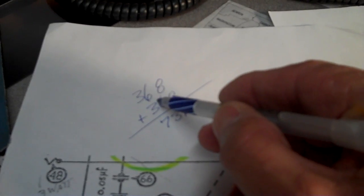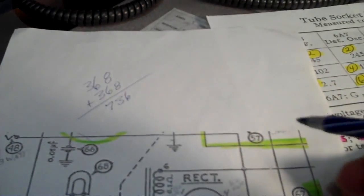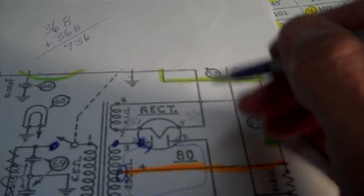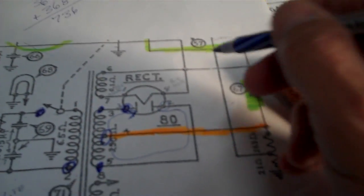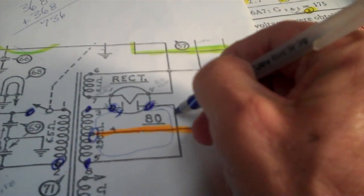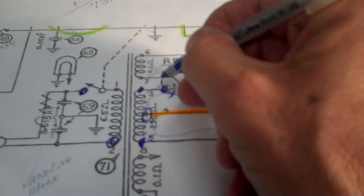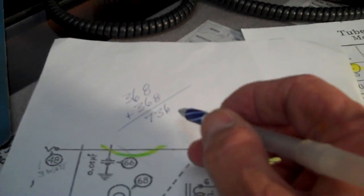Well, if we had 368 on one plate and 368 on the other, it stands to reason we should be reading 736 or thereabouts across the entire secondary of the power transformer, which would be from pin 2 all the way around, all the way through, all the way up to pin 3. We should get somewhere around 736.